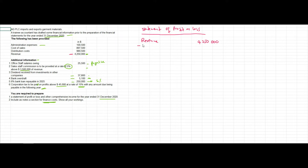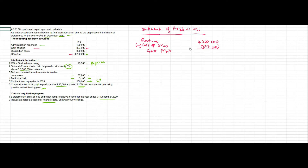Then you need to deduct the cost of sales. Cost of sales also has no adjustments to be made, so we can take it straight away as 897,500. When you deduct this, the gross profit will be 4,250,000 minus 897,500, which gives a gross profit of 3,352,500.